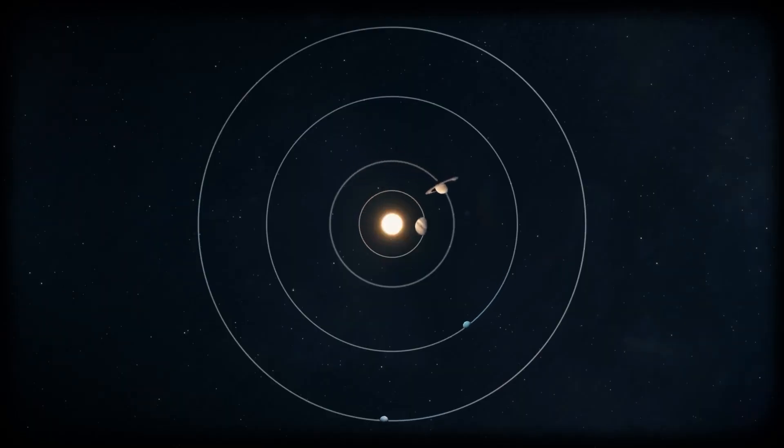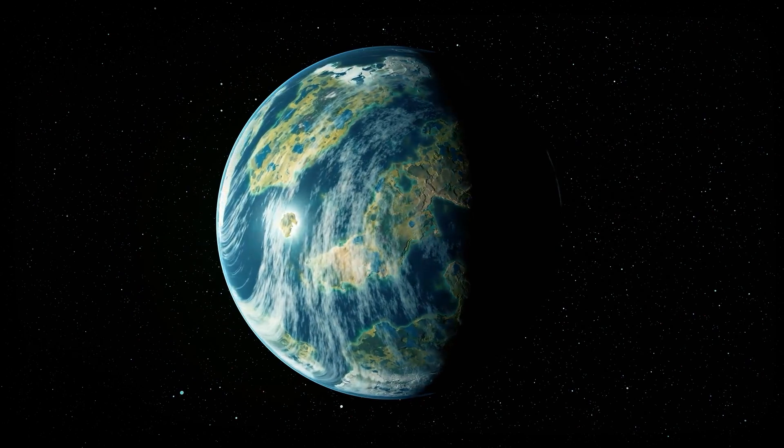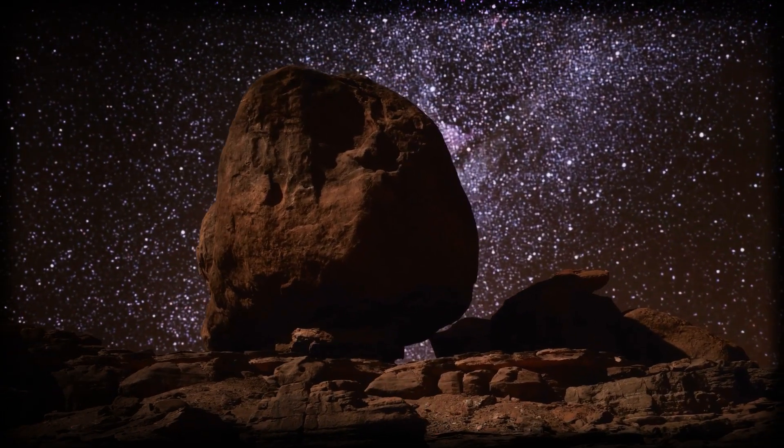Kepler didn't just find gas giants. It also revealed other exotic types of planets: Super-Earths, planets bigger than Earth but smaller than Neptune, made of rock, gas, or a mix of both.